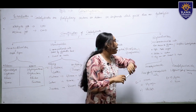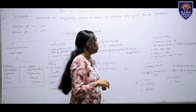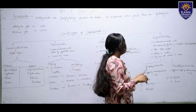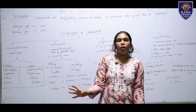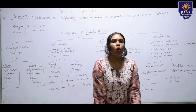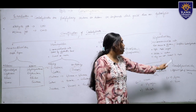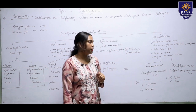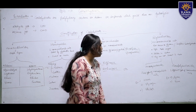Polysaccharides have more than ten monosaccharide units, also known as glycans and complex carbohydrates. They have high molecular weight, are soluble in water, and are not sweet in taste. They are of two types: homopolysaccharides, which have the same type of monosaccharide units, and heteropolysaccharides, which have two different types of monosaccharide units.